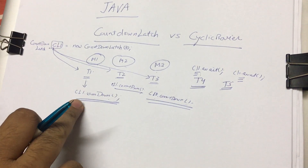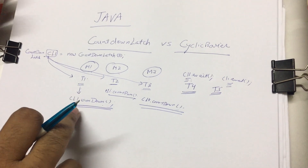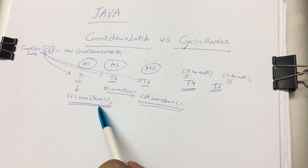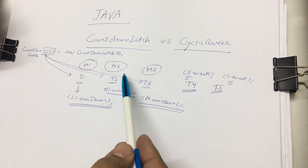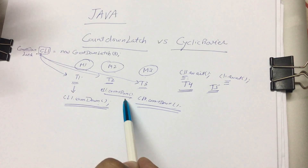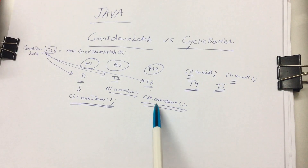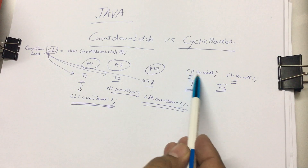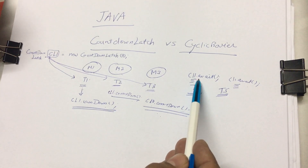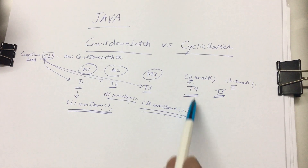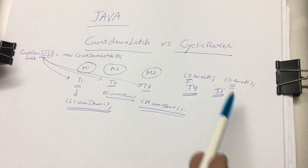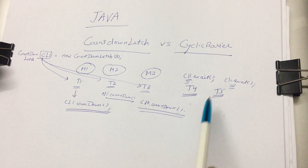Initially the count is 3. When t1 gets the response from m1, it decrements the count to 2. When t2 gets the response from m2, the count becomes 1. When t3 gets the response from m3, the count becomes 0. As soon as the count reaches 0, all threads waiting on the await method get notified, come out of the wait, and continue executing the next lines.